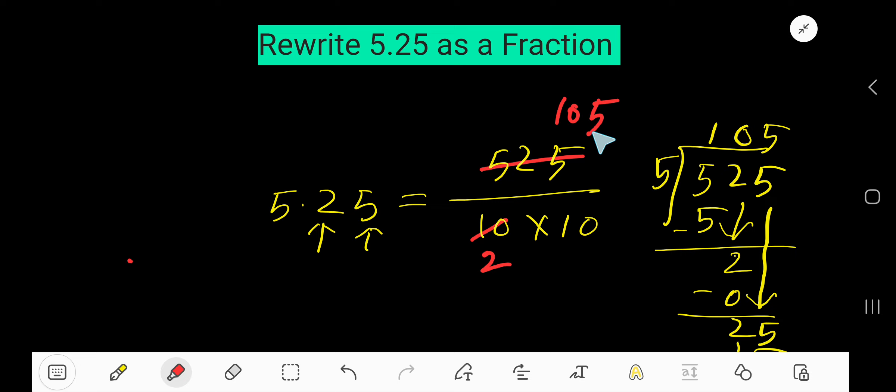And again, this 10 is divisible by 5. So if you divide this 10 by 5, you will get 2. Again, this 105 is divisible by 5. 5 goes into 10, 2 times. 5 goes into 5, 1 times. That is 21.